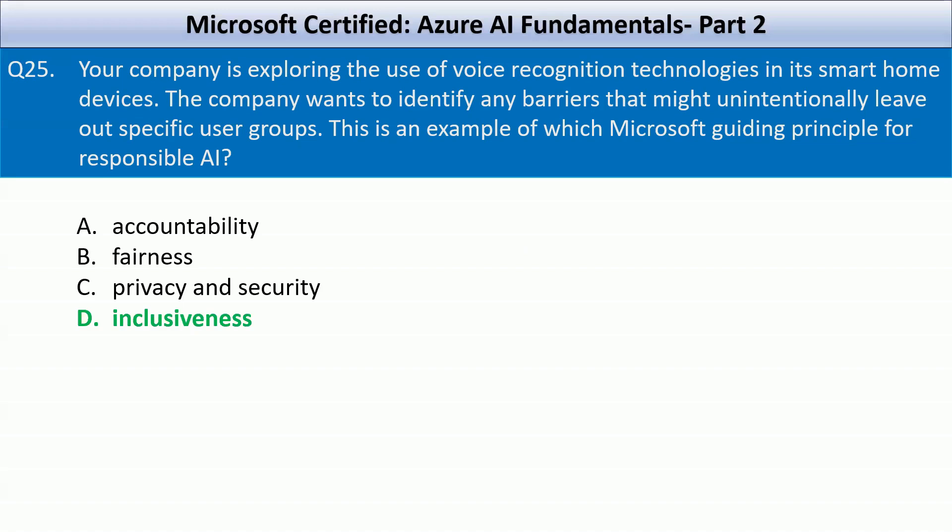Accountability focuses on ensuring AI systems are used responsibly with clear oversight. Fairness addresses bias and ensures AI models treat different groups equitably but does not directly address accessibility. Privacy and security ensures user data is protected and secure.